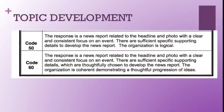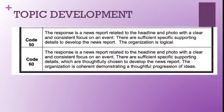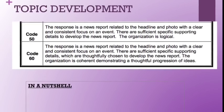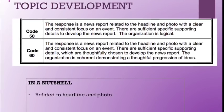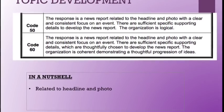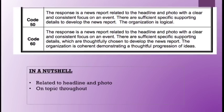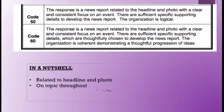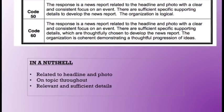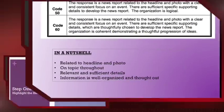In terms of topic development, let's take a look at the code 50 or 60 in the scoring rubric to see what's required for a successful completion of this writing task. What they're looking for is that you have written an article that is related to the headline and the photo, and that you have provided details that are relevant and stayed on topic throughout. Make sure that you use witness quotes to answer the 5 WHs and that you have relevant and sufficient details. Make sure your information is organized throughout and you've used short paragraphs.